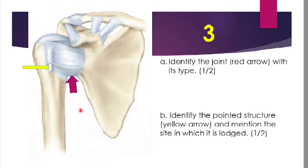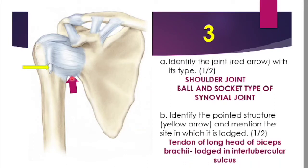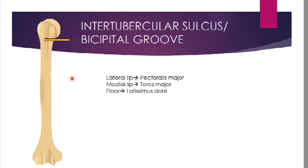The next question asks you to identify the joint shown by the red arrow with its type, and identify the structure shown by the yellow arrow and mention the site in which it is lodged. The joint is the shoulder joint, also called the glenohumeral joint, and its type is a ball and socket type of synovial joint. The yellow-collared structure is the tendon of the long head of biceps brachii, which is lodged in the intertubercular sulcus, or bicipital groove, located on the upper one-third of the humerus.